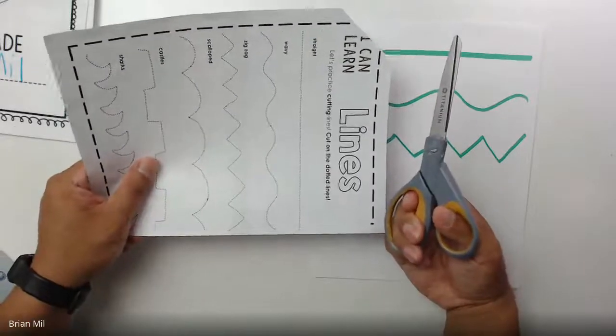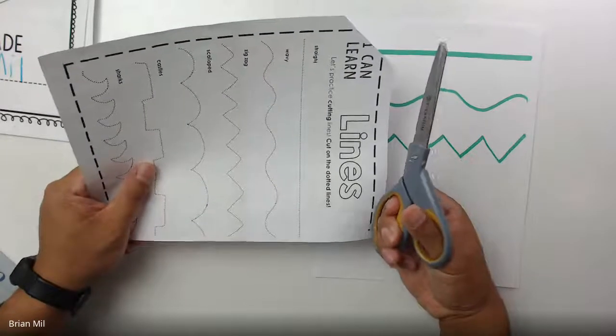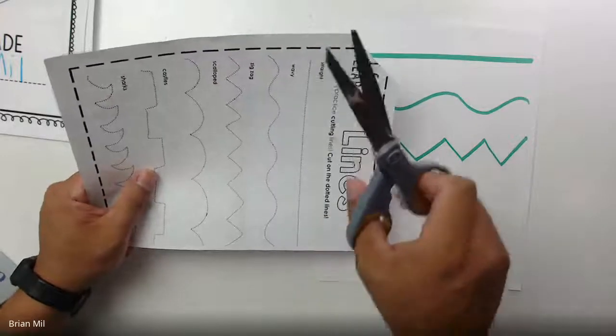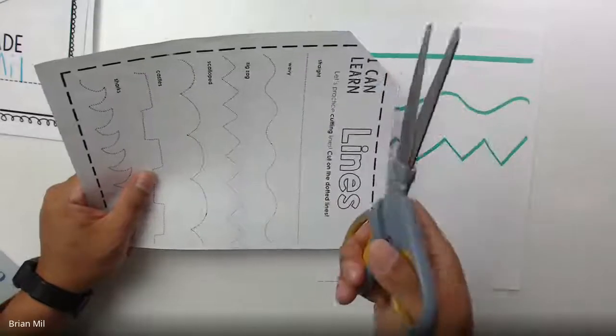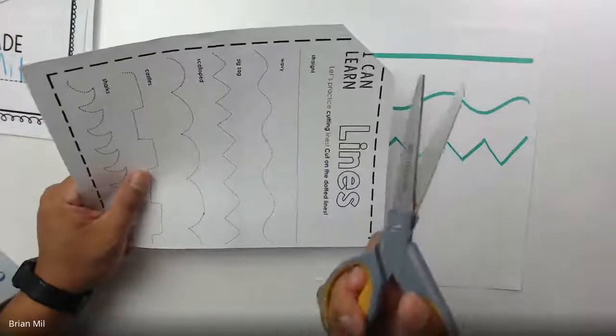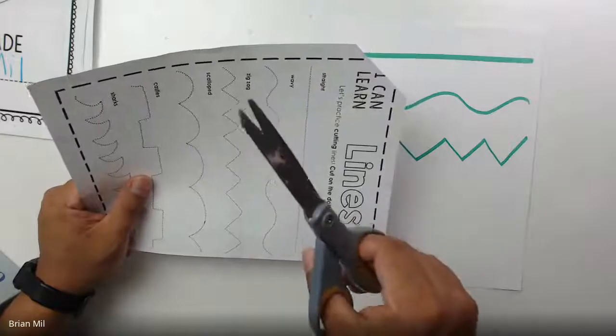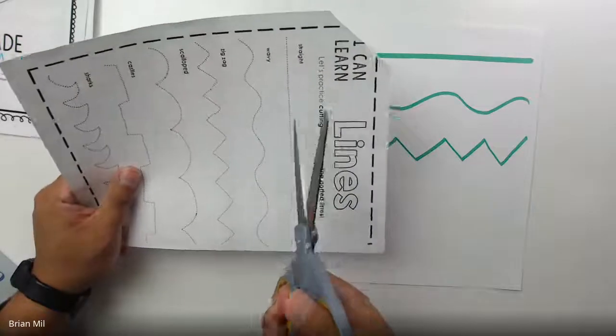If you are a lefty, it's the same thing: thumb on the big hole and three fingers on the small hole. With my left hand, my empty hand, you can hold the piece of paper just like this.